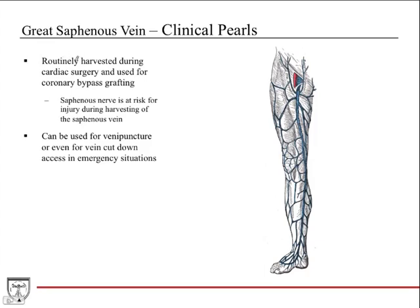A major clinical use: the great saphenous vein is routinely harvested during cardiac surgery for coronary artery bypass grafting (CABG). During harvest, the saphenous nerve travels right alongside it, so there is risk of nerve damage. The vein can also be used for venipuncture or vein cut-down in emergency situations.